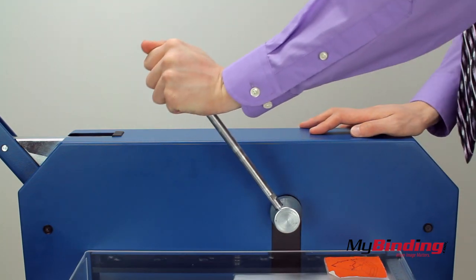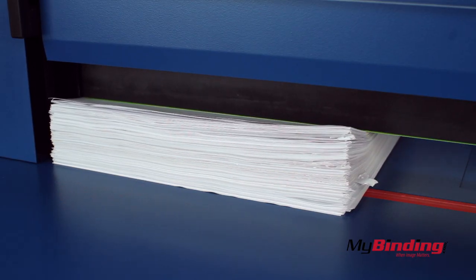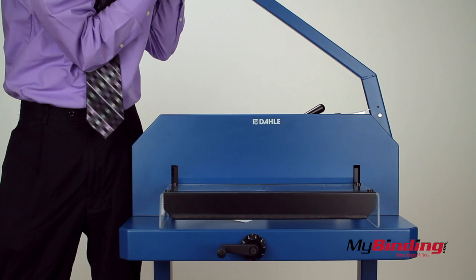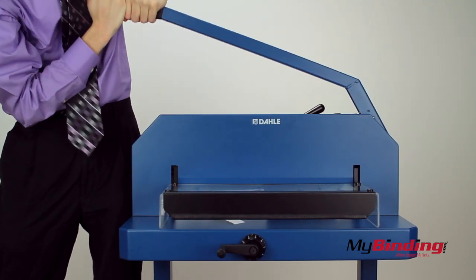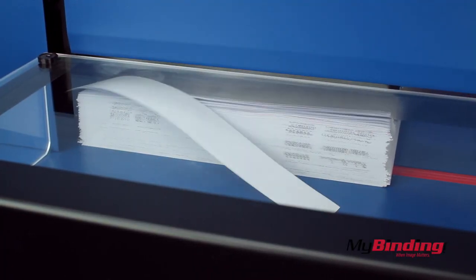Next, pull the back lever to clamp your pages in place. This is a very sturdy clamp. Then pull the larger lever down to make your cut. It takes a bit of work to pull it down, but for cutting 500 sheets at a time, it seems pretty easy.